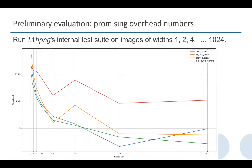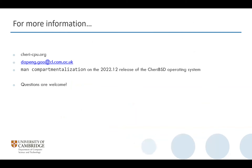I would like to share some preliminary performance numbers. We are running libpng's internal test suite on images of various sizes, and as you can see, on all of these performance indicators the overhead converges to about one percent, which is very promising. Of course this is just a preliminary evaluation. For more information you can check out cherrycpu.org or email me. Also in the latest release of CheriBSD, the prototype of library-based compartmentalization is included and you can check the man page for that. Thank you very much.